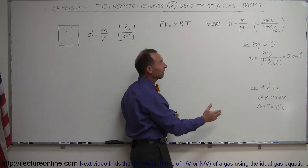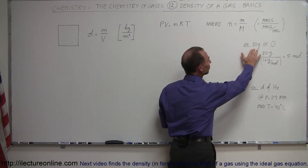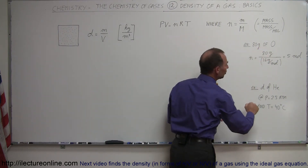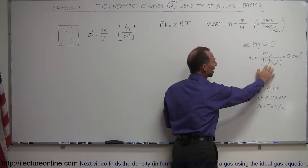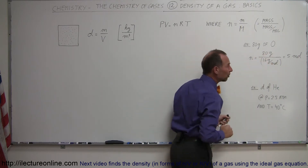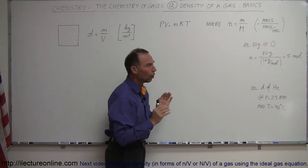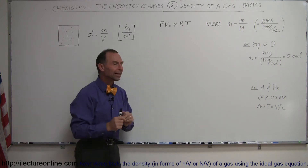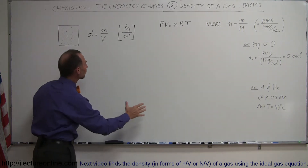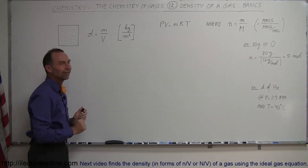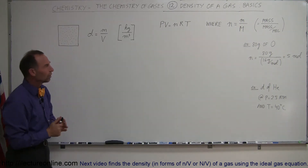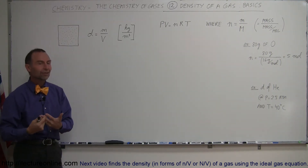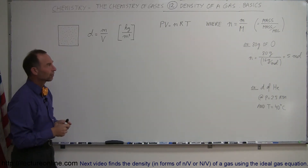As an example, let's say you have a container of 80 grams of oxygen. If you divide 80 grams by the molar mass of oxygen, which is 16 grams per mole, you get 5 moles. All those things put together will allow us to come up with a good definition and equation to calculate the density of a gas.